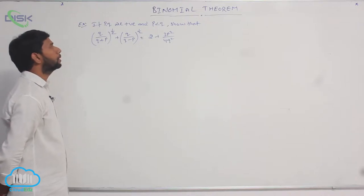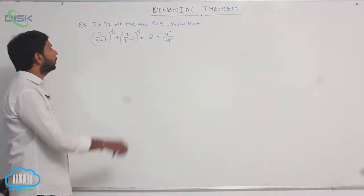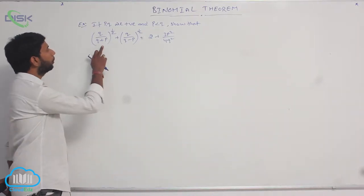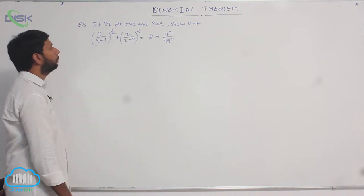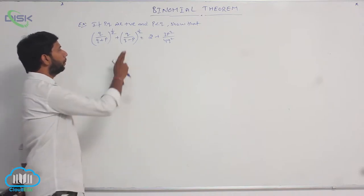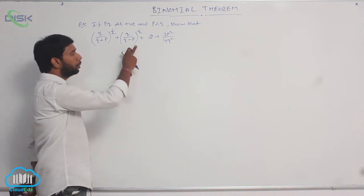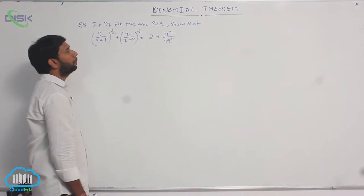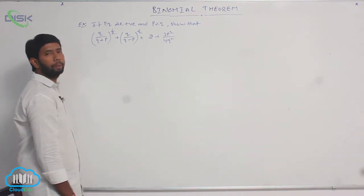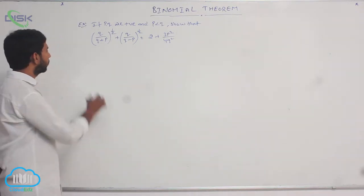If P and Q are positive and P is less than Q, then show that Q over (Q plus P) to the power 1/2, plus Q over (Q minus P) to the power 1/2, is equal to 2 plus 3P squared by 4Q squared.